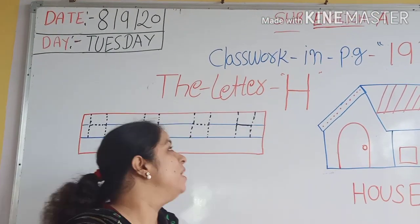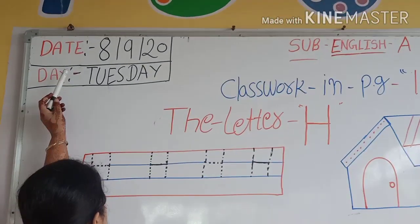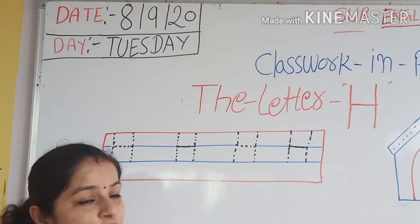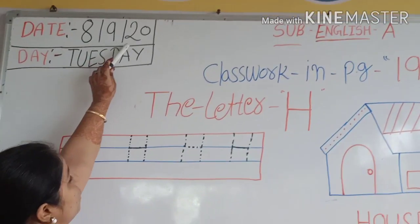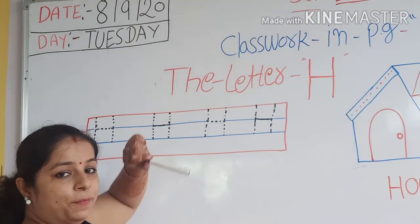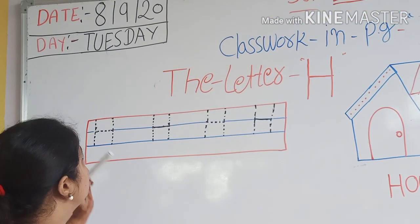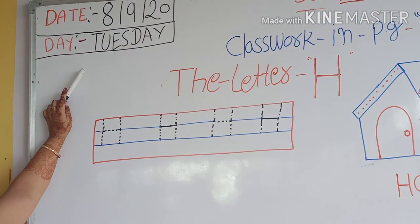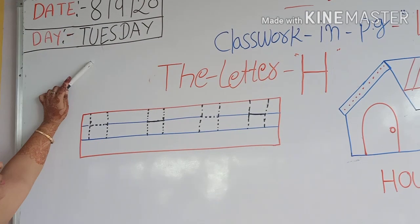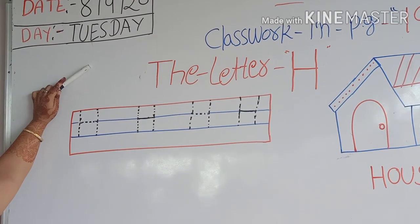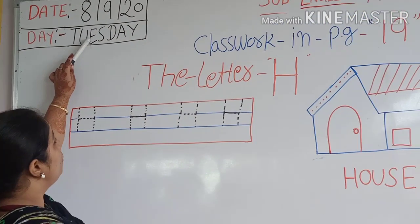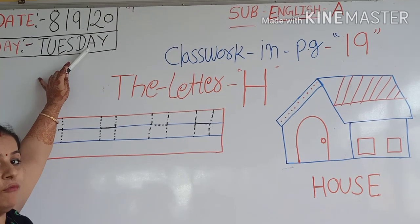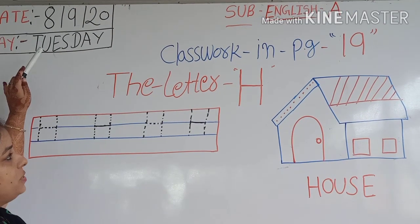First of all, which date is today? Tell me kids. Which date is today? 8, 9, 2020. Which day is today? Tell me kids. Tuesday. Spelling of Tuesday: T-U-E-S-D-A-Y. Tuesday.